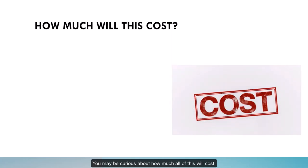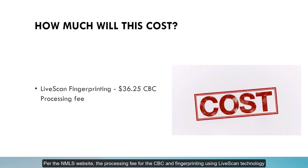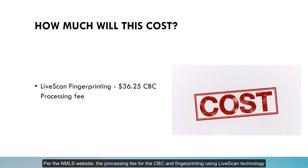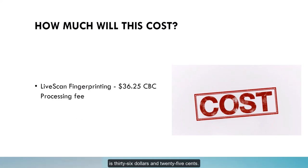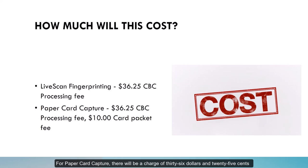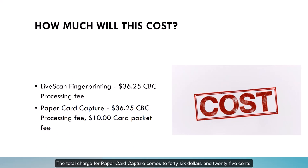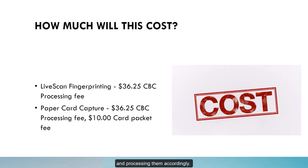You may be curious about how much all of this will cost. Per the NMLS website, the processing fee for the CBC and fingerprinting using live scan technology is $36.25. For paper card capture, there will be a charge of $36.25 for the CBC processing fee and an additional charge of $10 for the fingerprint card packet. The total charge for paper card capture comes to $46.25. The additional $10 charge is to cover the cost of the fingerprinting supplies and processing them accordingly.